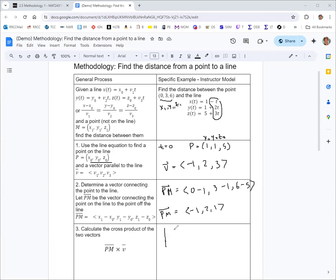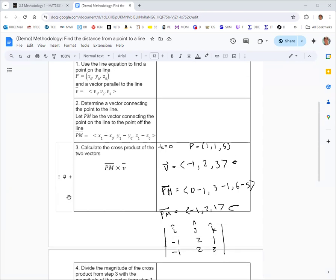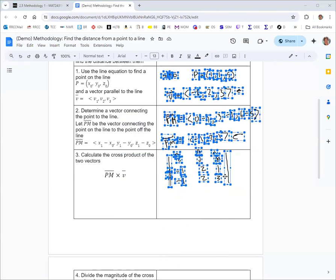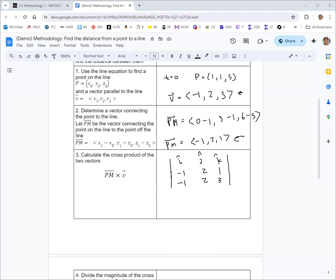We saw in the last methodology how to do that, we set up a matrix with i, j, k in the first row. The middle row is the first vector mentioned in the cross product, the vector from P to M, so -1, 2, 1. The bottom row is the second vector, which is v, which is <-1, 2, 3>. And then we find that cross product.